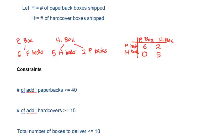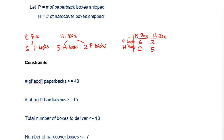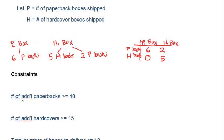Now let's write the constraints in terms of p and h. The first constraint: total number of additional paperbacks must be greater than or equal to 40. One paperback box contributes six paperback books, so the coefficient of p is 6. One hardcover box contains two paperback books, so the coefficient of h is 2. This gives us 6p plus 2h greater than or equal to 40.